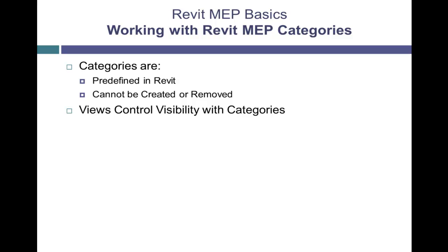Back to the air terminal category, when the square diffuser and round diffuser families are created, they must be specified as air terminals so they will fall into the air terminal category. During the design, the electrical and plumbing teams do not want to see the air terminals, so they will turn off the air terminal category.